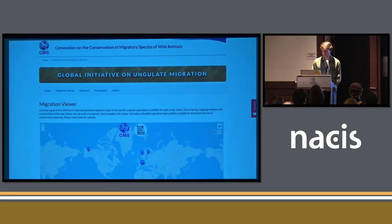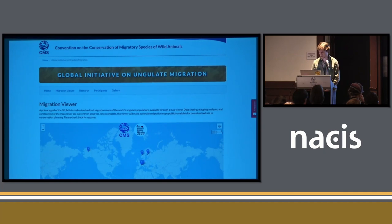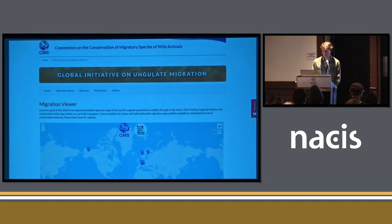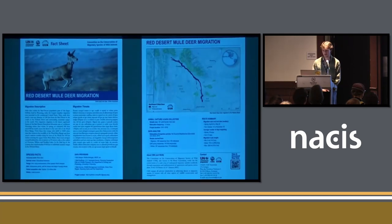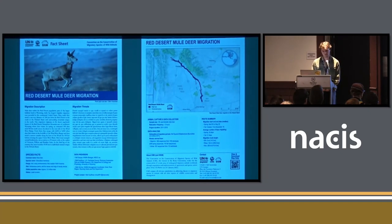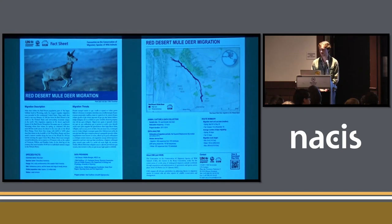One of the primary products would be a web viewer hosted on the CMS website, showing migration data shared by members of GUME across the globe. The infographics lab is currently helping produce a better-looking base map for that. Each population would also have a corresponding fact sheet providing a more curated and detailed story, including a text description of the population, the threats, and various scientific facts — but importantly, also a detailed map designed to show movements in relation to the landscape and potential barriers. This is what I've been working on for the past year or so.